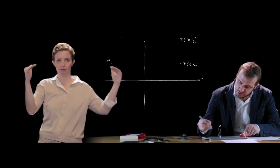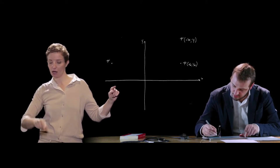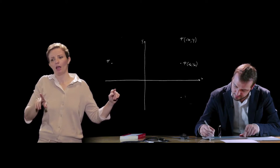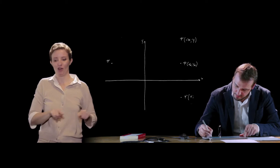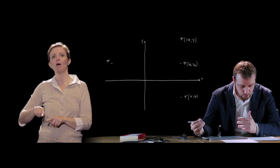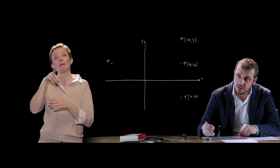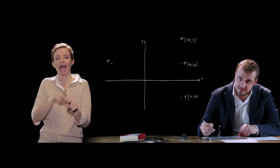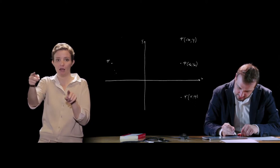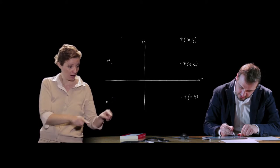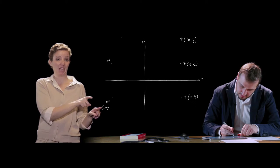Il punto simmetrico di P rispetto all'asse delle x è un punto che ha la stessa ascissa del punto P ma ordinata opposta, quindi P' avrà coordinate (xP, -yP). Il simmetrico di P rispetto all'origine, chiamato P3, è caratterizzato da ascissa ed ordinata entrambe opposte rispetto a quelle del punto P, con coordinate (-xP, -yP).